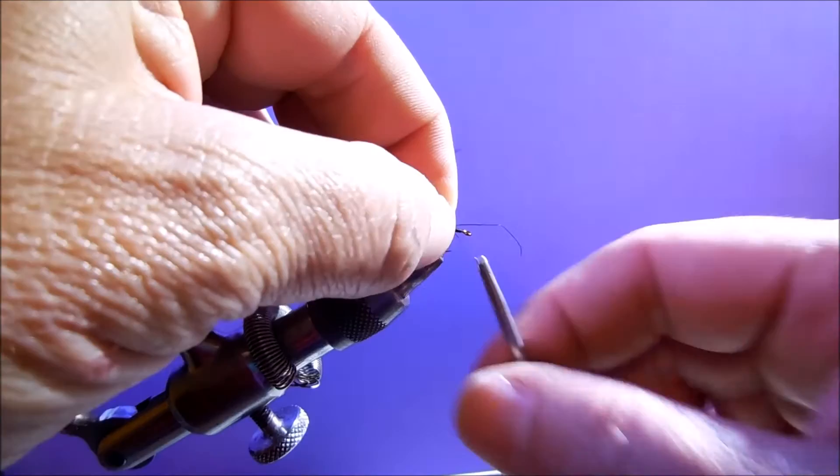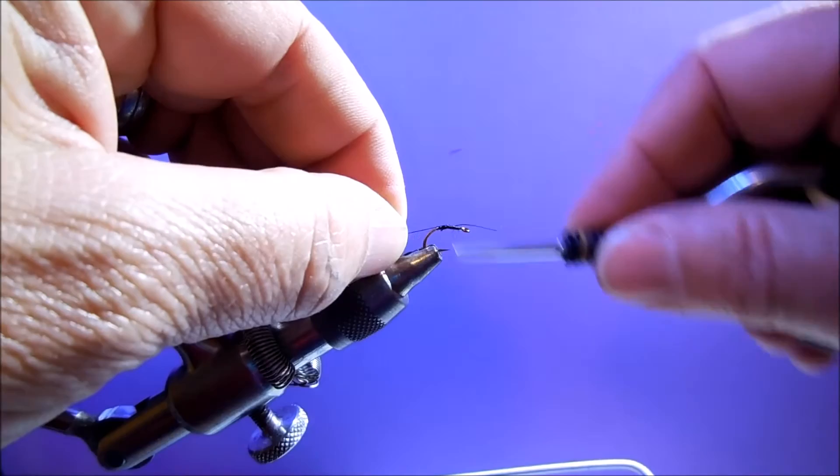Lay a piece of thread over the top and just wrap back towards the bend of the hook.